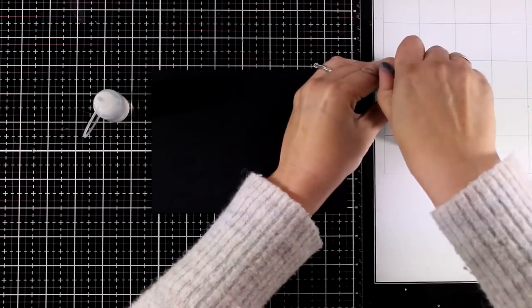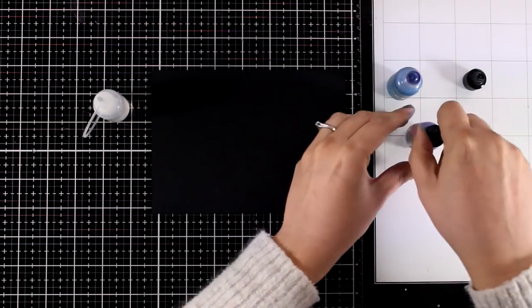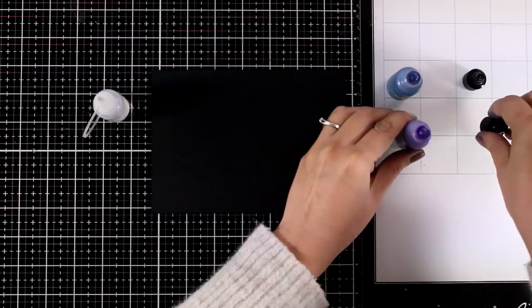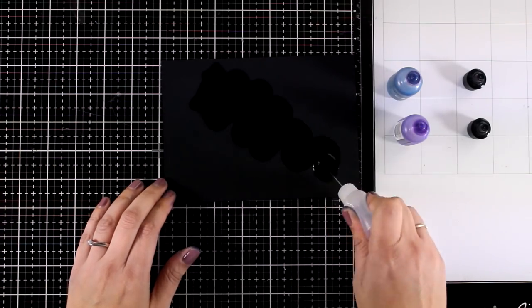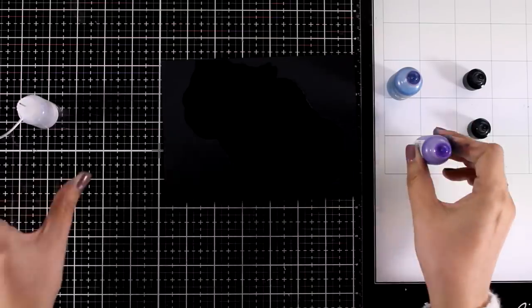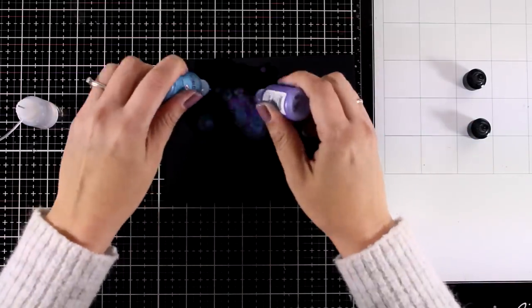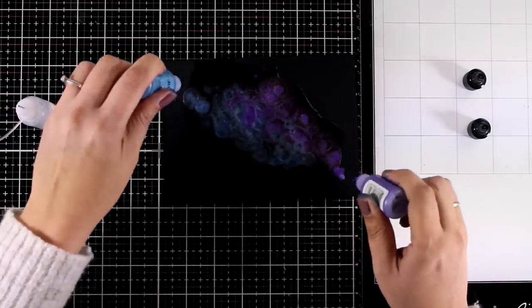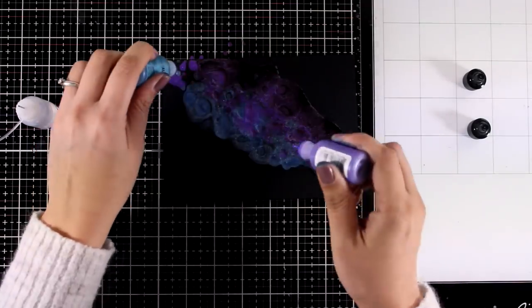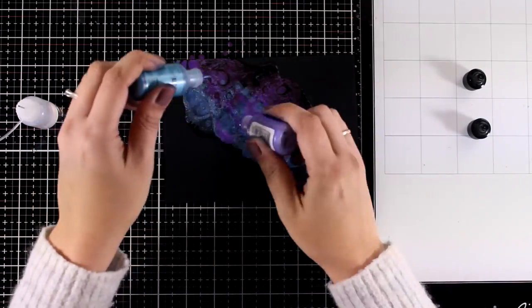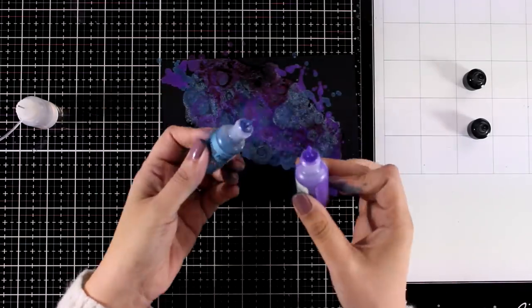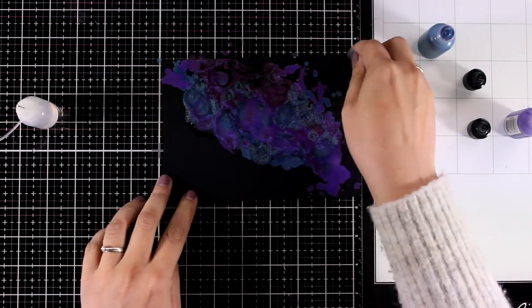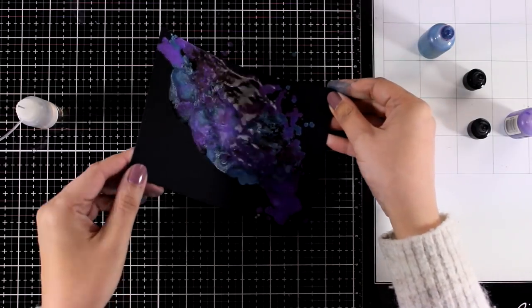These purple alcohol inks do have mica inside so make sure to shake them well before you start out. I have here my blending solution and I'm going to play around just applying both those colors on top of my black cardstock. This black cardstock is specifically made for alcohol inks, it has a matte lovely finish and I absolutely love touching that. Anyway, I am blending them together, I'm going to help them blend nicely.